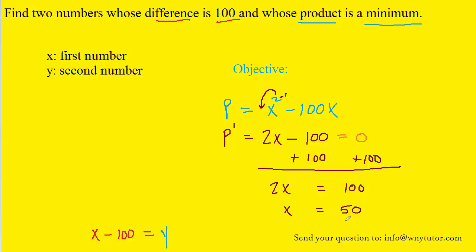Now to confirm that this value of x actually minimizes the product, we would have to apply the first derivative test. In that test we plot our critical value, which was 50, on a number line. Then we select a value that's less than the critical value and a value that's greater than the critical value and plug it into the derivative. For example, we could choose 40 as well as 60 and plug it into P prime.